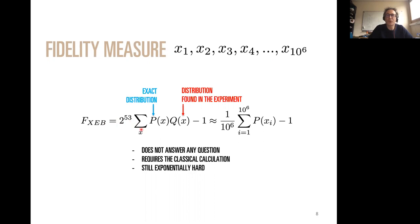Cross-entropy benchmarking is not the best fidelity measure, but it's one they can compute. Essentially you compute the sum over all bit strings of the correlation between the distribution p(x) you should have gotten and the one you actually got, times a normalization. In practice, since you have samples of q(x), this is approximated by the average of p(x) over those samples. This still requires a classical calculation, and it's still exponentially hard because this number decays exponentially with the circuit depth or number of qubits.